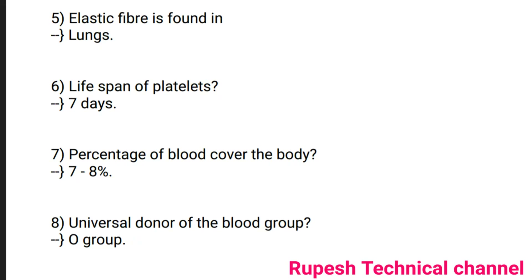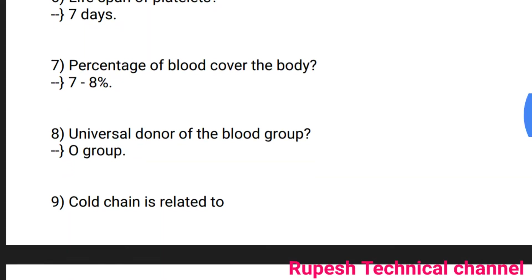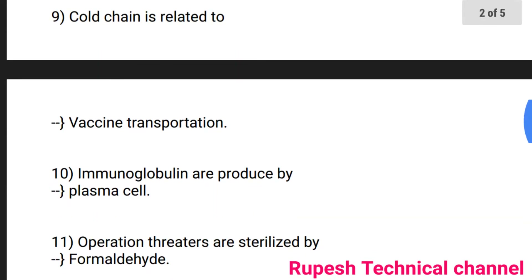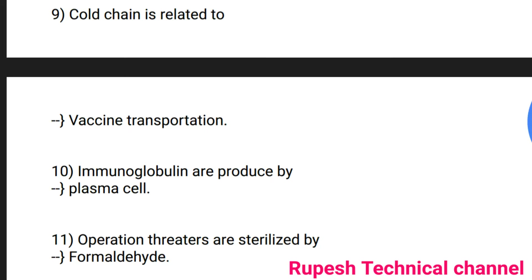Question number 7: Percentage of blood covering the body is 7 to 8 percent. Question number 8: Universal donor blood group is O group. Question number 9: Cold chain is related to vaccine transportation. Question number 10: Immunoglobulins are produced by plasma cells.